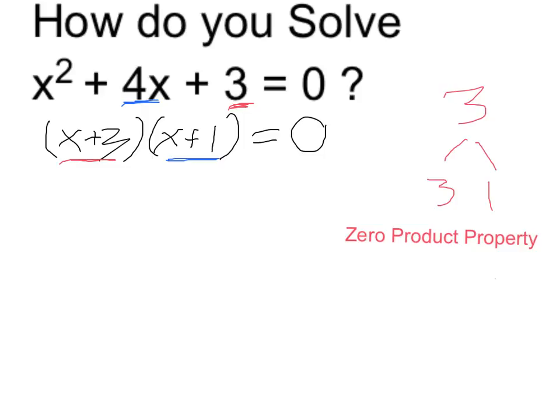x plus 3 is equal to 0 when x itself is equal to negative 3, because negative 3 plus 3 equals 0. Or, x is equal to negative 1 would make the second thing equal to 0. So our two possible options are x is equal to negative 3 or negative 1. I'm proposing these are the two solutions to my quadratic equation.